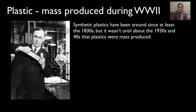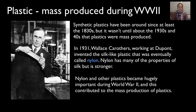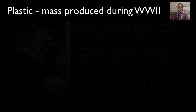Plastic was mass-produced during World War II — plastics had been around since about the 1830s, but WWII really helped get them mass-produced on a large scale. In 1931, Wallace Carothers was working at DuPont and invented a silk-like plastic that we now call nylon. It has a lot of the properties of silk but is much, much stronger. Nylon and other plastics became hugely important during World War II, contributing to their mass production.